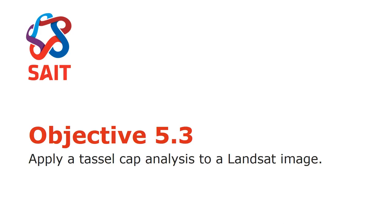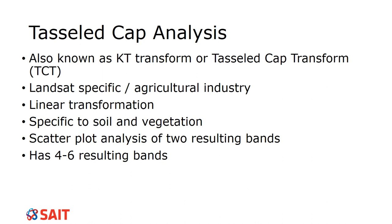The third transformation we're going to investigate is known as the tasseled cap analysis. This one is really a Landsat transformation — it's specific to Landsat. You can try to apply it to other satellites, but the equations aren't ready for it, so you would have to calculate the equations yourself using a least squares estimation. The tasseled cap analysis is also known as the KT transform, and it is specific to the agriculture industry.